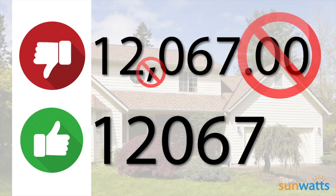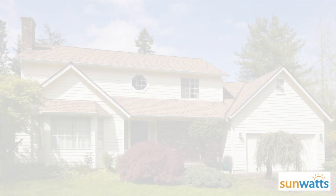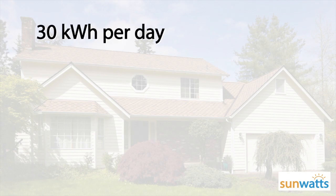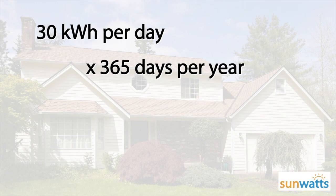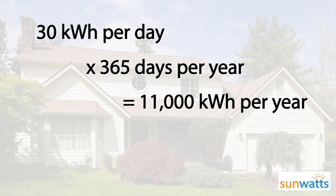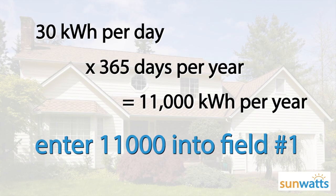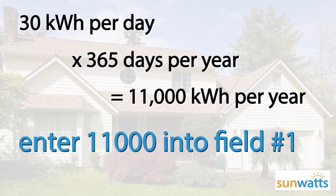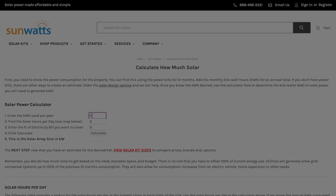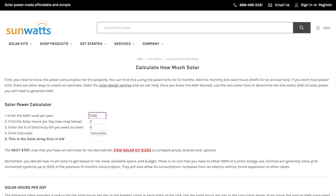Do not include commas or decimal points. As an example, the average home in the USA uses 30 kilowatt hours per day. Multiply that by 365 days, and the average home in the USA uses 11,000 KWH of electricity per year. So let's enter 11,000 into field number one.